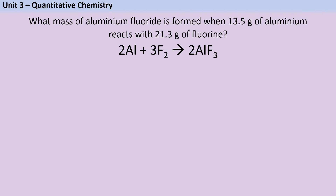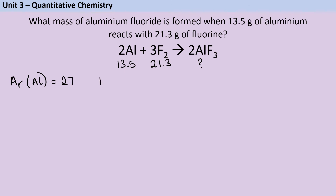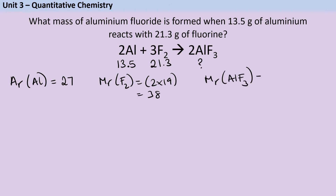For this question I'll again start by writing my masses in the relevant places: 13.5 grams of aluminium and 21.3 grams of fluorine, and I'm trying to work out the mass of aluminium fluoride. For aluminium, I'll use the relative atomic mass (Ar) rather than Mr since it's a metal not forming molecules — that's 27. The relative formula mass of fluorine (F₂) is 2 × 19 = 38. And for aluminium fluoride (AlF₃), it's 1 × 27 plus 3 × 19 = 84 grams per mole.